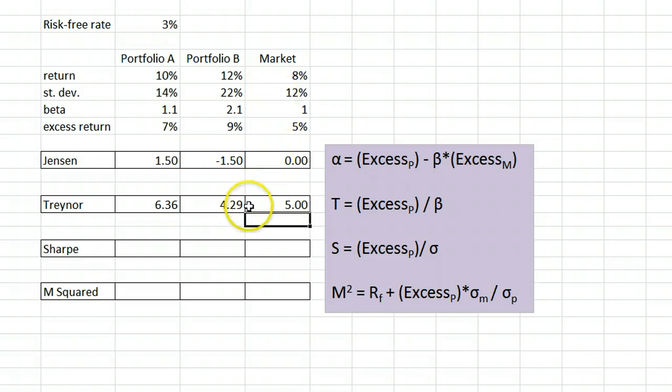The results are essentially telling us the amount of return we received per unit of beta that we took on. We see that portfolio A beat the market's risk-adjusted return while portfolio B did not. Putting it another way, while portfolio B had the highest absolute return at 12%, it took too much extra risk to get that return.